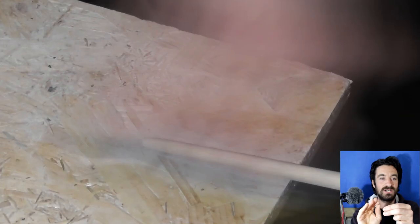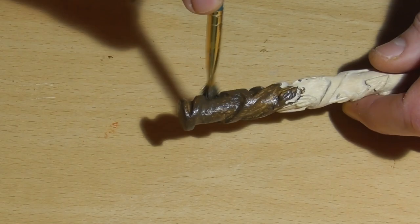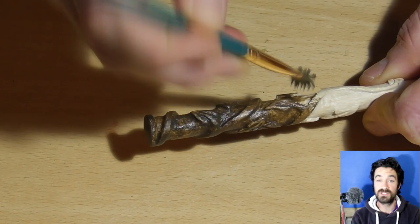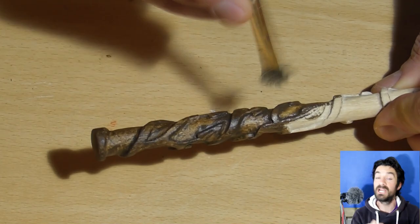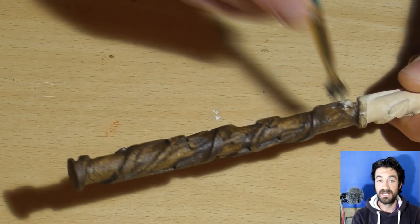Once the sanding was done, I then went on to painting the wand and this is with burnt umber, just plain acrylic. It's Daler and Rowney System 3 acrylic paint, and it's just basically coating the entire wand in a layer of that. It was actually two layers to get it dark enough and deep enough a color.